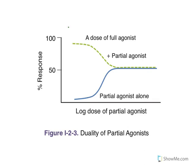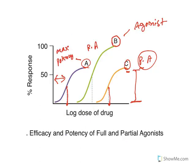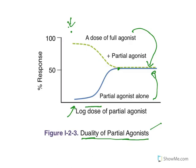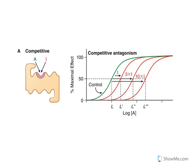Now a small comparison: when you give only an agonist it shows a higher response. But if you give a partial agonist alongside a full agonist, the full agonist response comes down in the presence of the partial agonist — this is called the duality of partial agonist. When only the partial agonist is given it shows some activity, but in the presence of a full agonist it reduces the efficacy of the agonist.